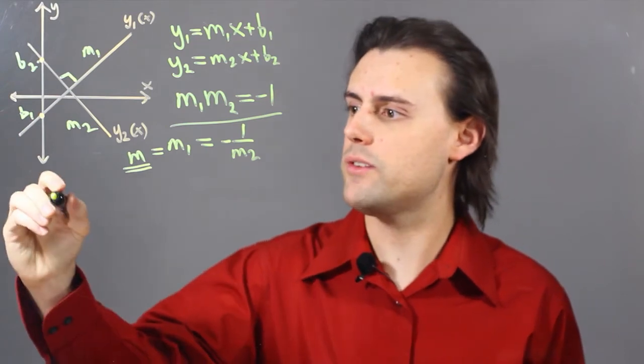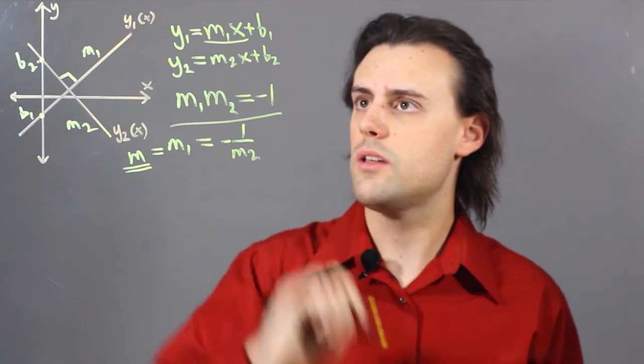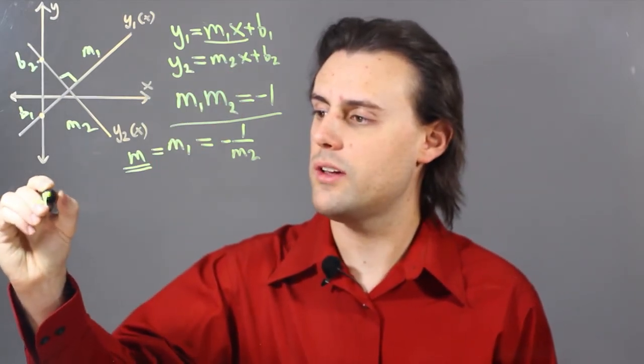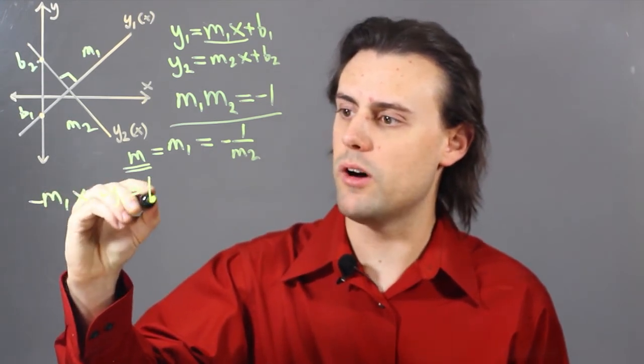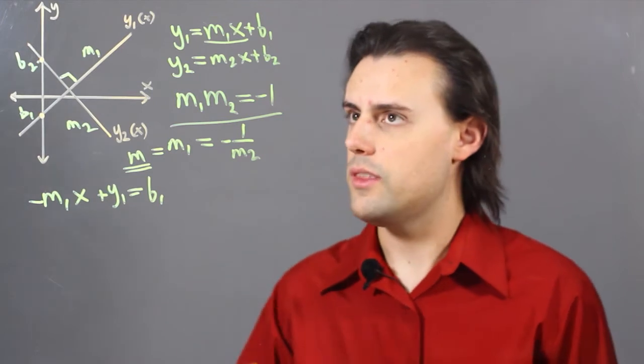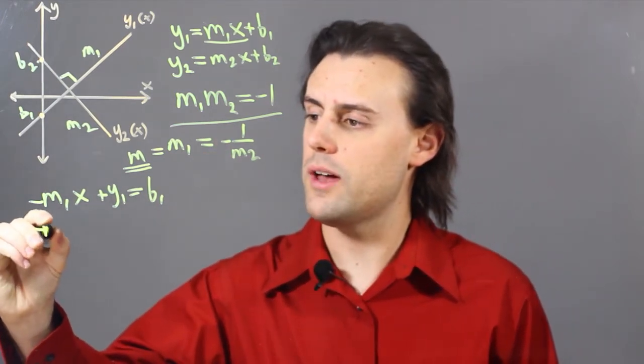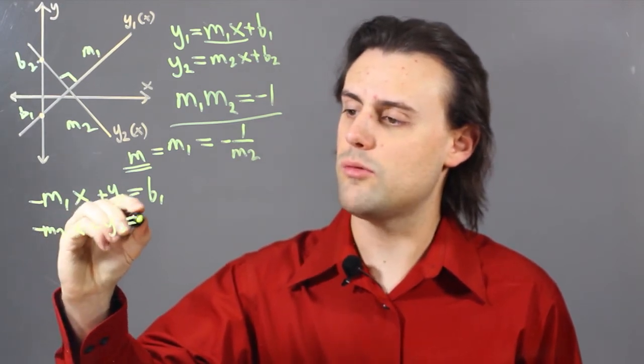So let's start with the standard form for line 1. We're going to move the x term over to the left-hand side, so I have negative m1x plus y1 is equal to b1, and then for the second line, I'm going to have negative m2x plus y2 is equal to b2.